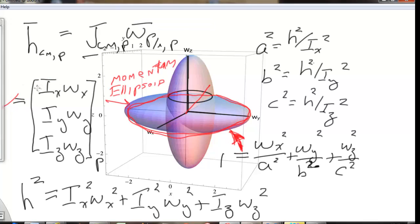If you look at the momentum ellipsoid, you can solve for the angular momentum. Again, put it in an ellipsoid format, which is done over here, and that would give you the horizontal ellipsoid.